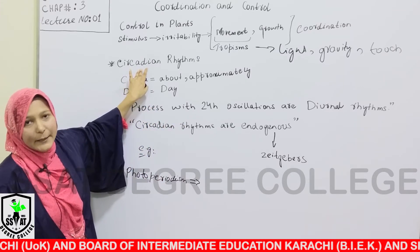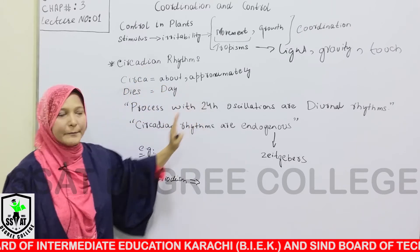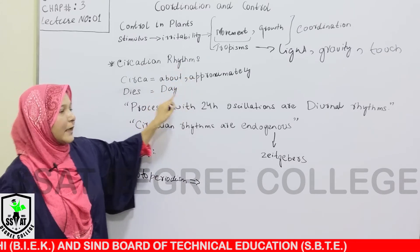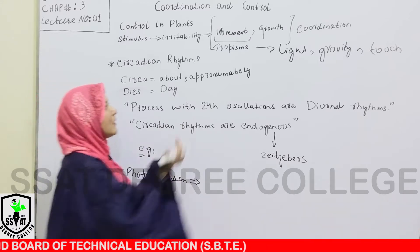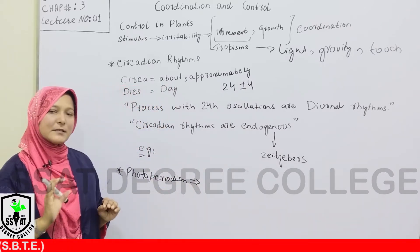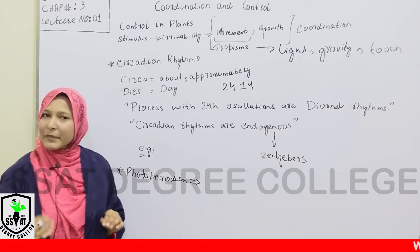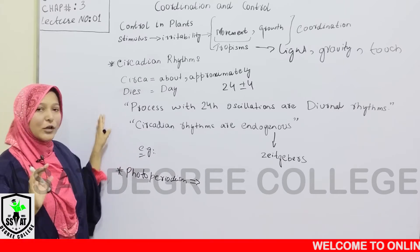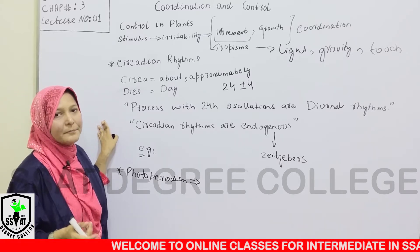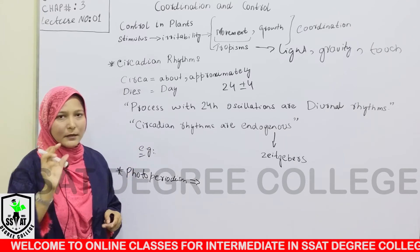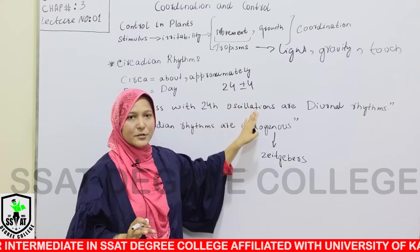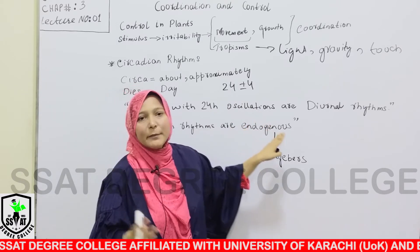First let us define the word: 'circa' means approximately and 'dies' means day. When we combine these two terms it becomes 'circadian.' A circadian rhythm is a rhythm that occurs within one day, i.e., around 24 hours — more or less. If we write more or less: 24 hours plus or minus 4 hours. So it could be slightly more than 24 hours or slightly less, either in hours or minutes. If a particular plant movement is occurring continuously every 24 hours, that is a circadian rhythm.